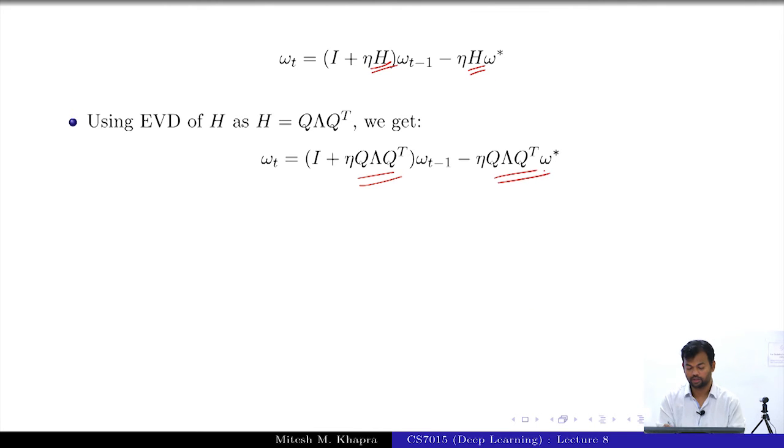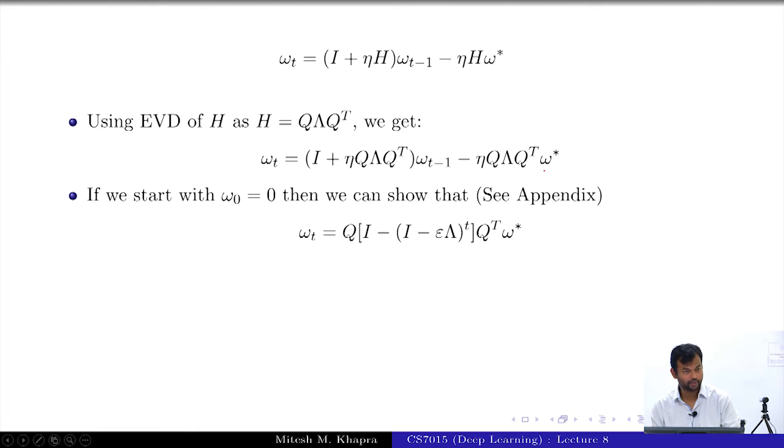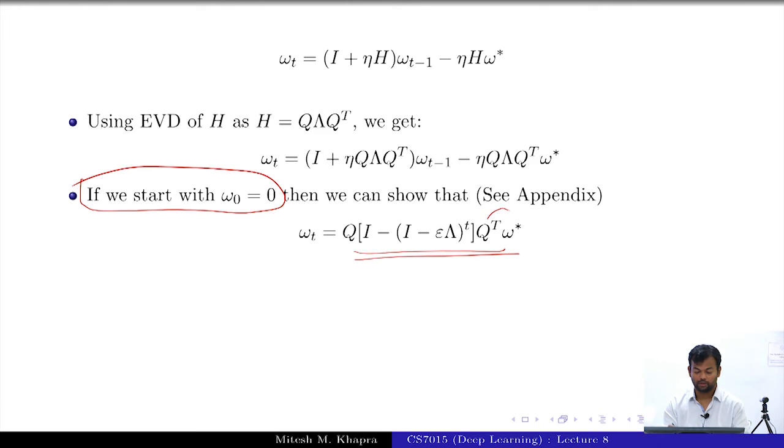This is what w_t would be. This is again some simple steps leading to some conclusion. The conclusion is what matters, the steps are very easy you can go back and look at them. Again I will use the EVD, the same trick that I did earlier and it will give me this instead of H. Again I will just do some rearrangements and actually I can show that if I start with w_0 = 0 then w_t is actually given by this quantity and there is a proof of this in the appendix you can go and look at it.